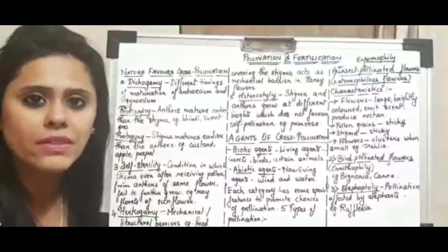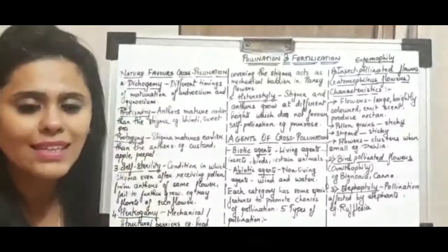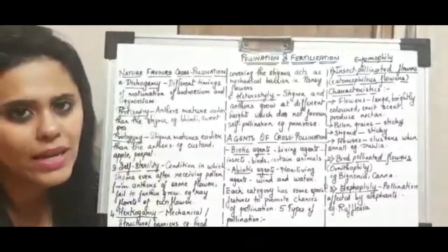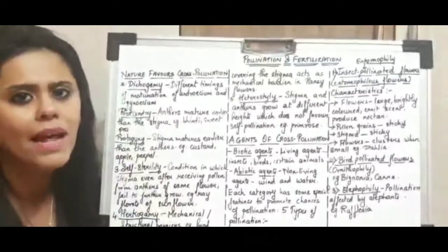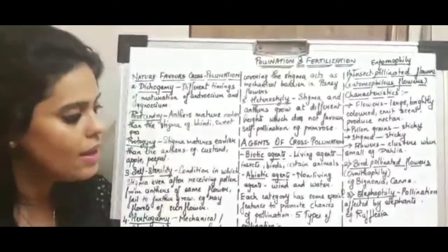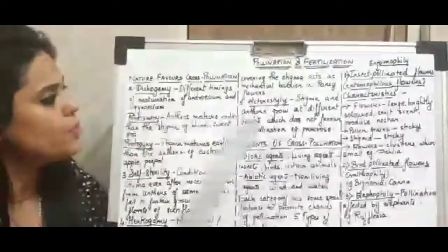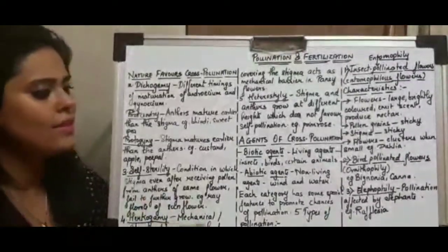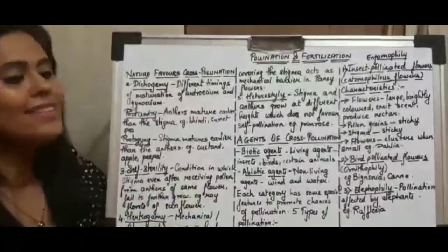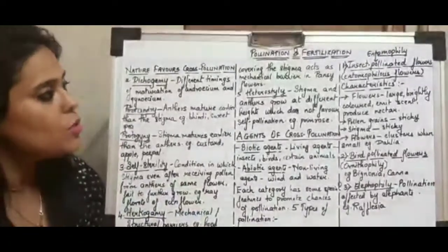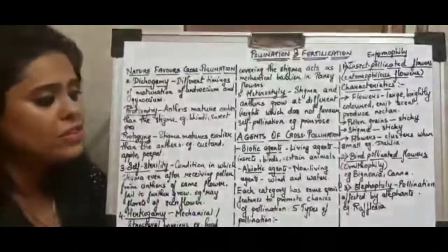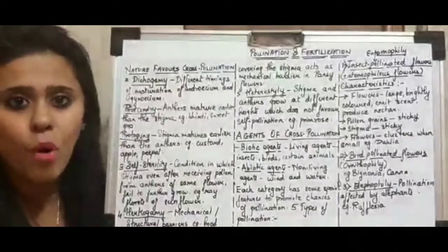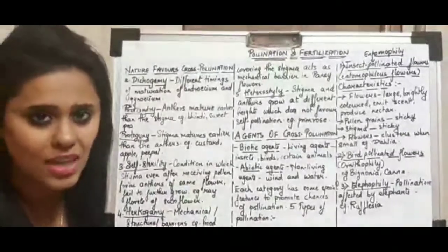One of the contrivances we studied in the last slide was unisexuality. Next contrivance, continuing in this slide — the definitions are very important in this chapter.